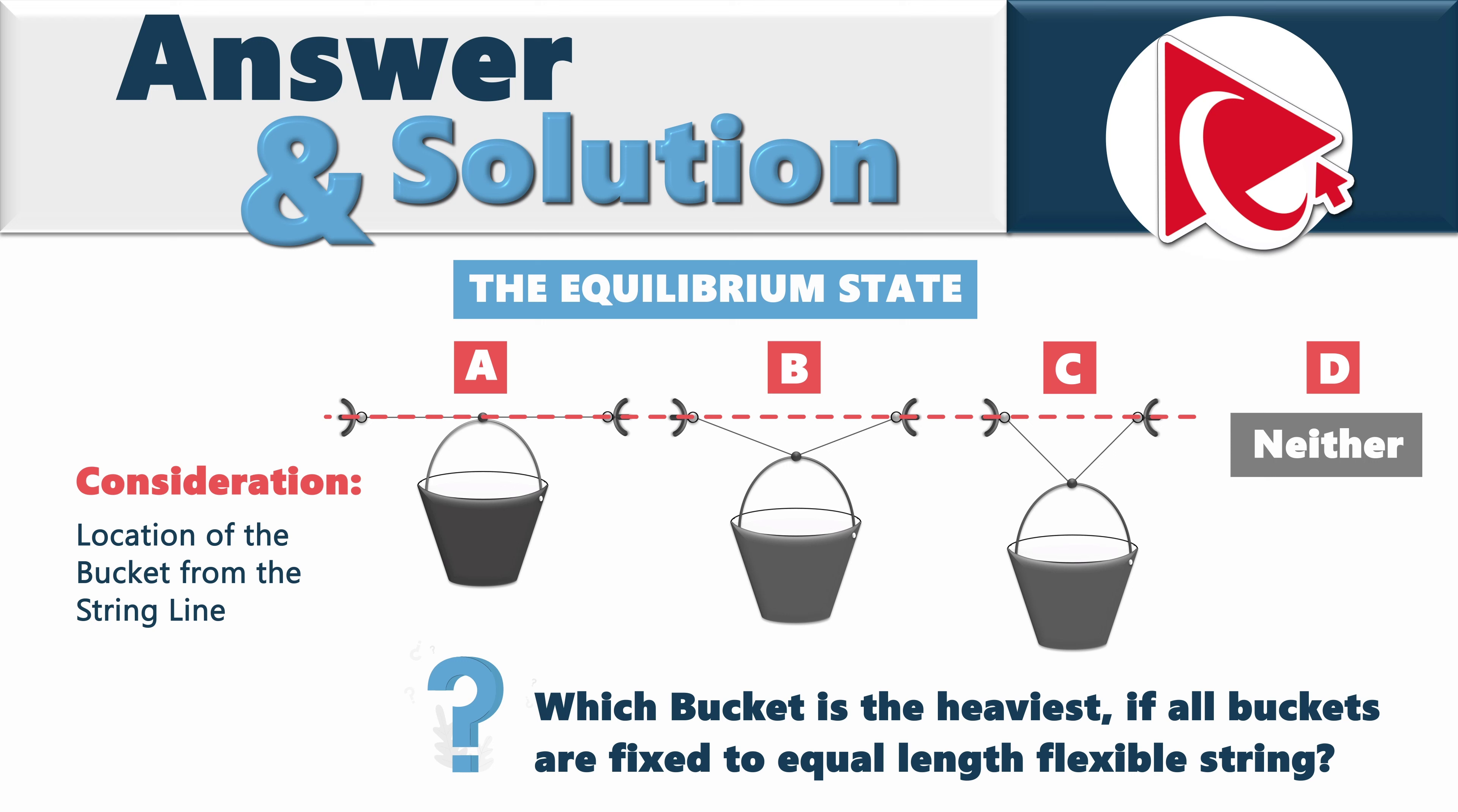However, due to the differences in weight, the heavier bucket will exert a greater downward force on the string compared to the lighter buckets. As a result, the heavier bucket will cause more tension in the string, causing it to sag lower compared to the lighter buckets.